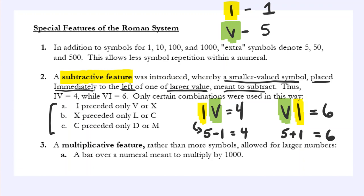For representing larger numbers, the Roman system has a multiplicative feature: if you have a bar over an entire number, that means multiply that number by 1,000. So whatever number you see represented with a bar above it is times 1,000.